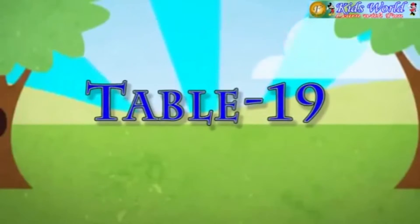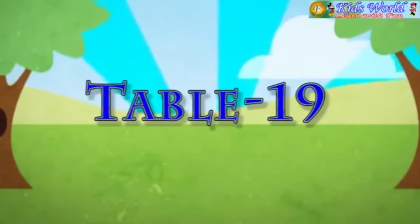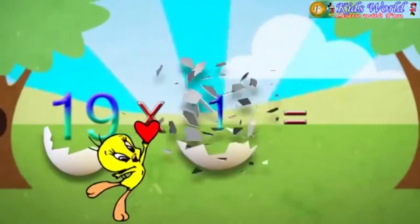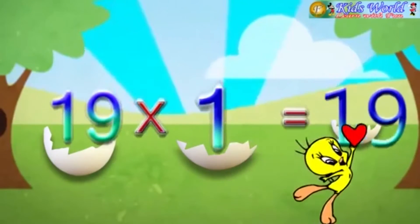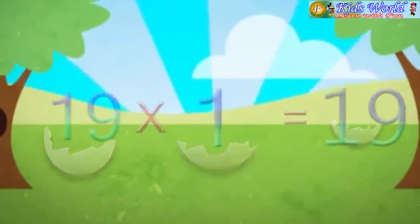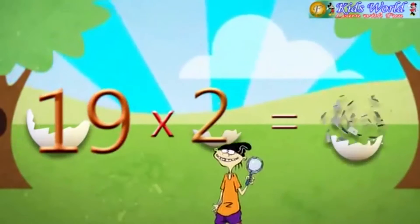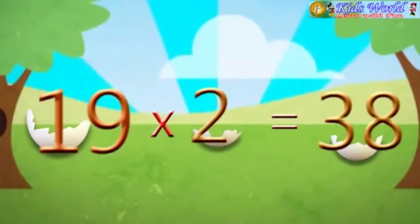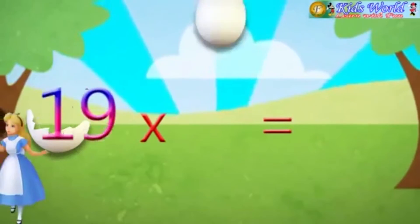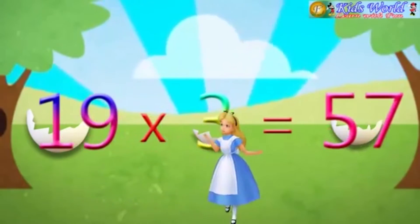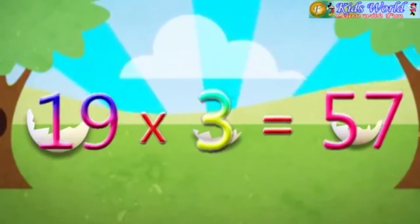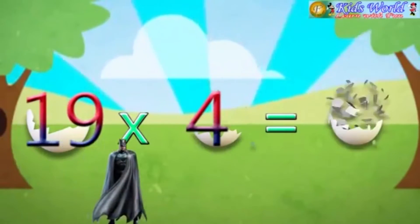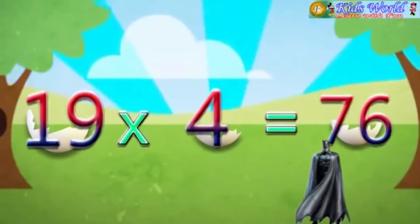Table 19. 19 into 1 is equal to 19. 19 into 2 is equal to 38. 19 into 3 is equal to 57. 19 into 4 is equal to 76.